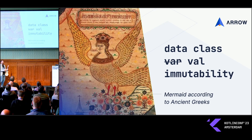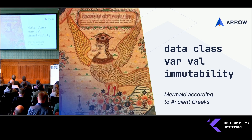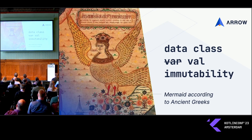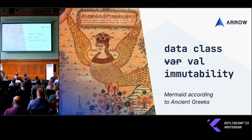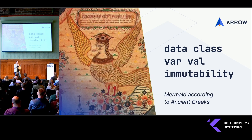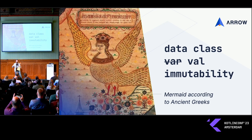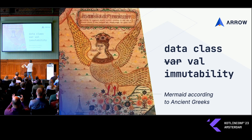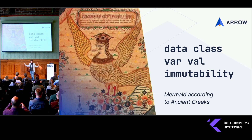I wanted to have data classes, val everywhere, immutability — they were singing, don't mutate. It's bad. I found that's like the mermaid according to Wikipedia, so we're going to be fine with that.